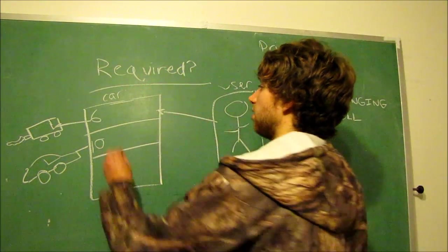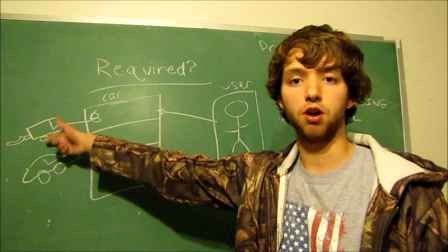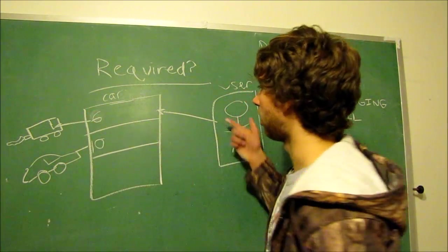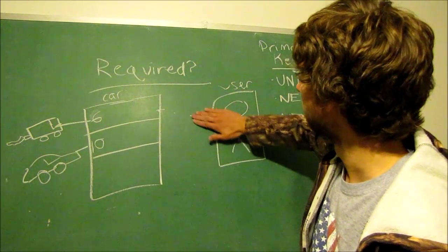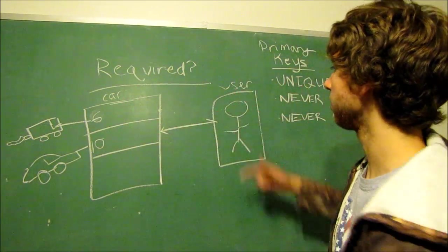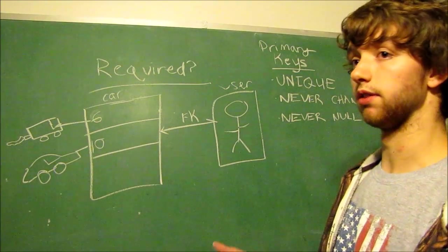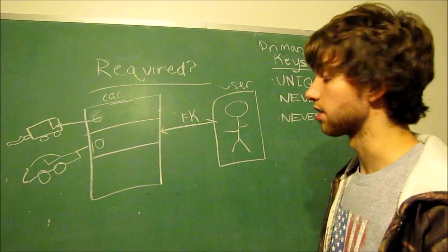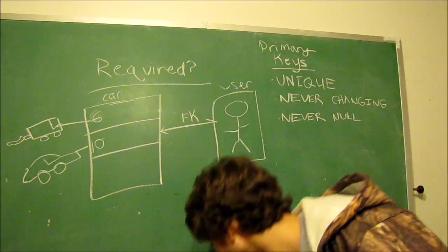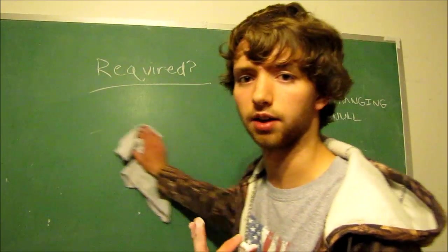We don't ever want it to happen to where this number gets updated or we change the primary key and it's still referring to the same exact car because then we have a changing primary key. But with foreign keys, it can change in the sense that I no longer own this car, now I own this car. So we didn't have any primary keys updated, but the foreign keys, which would be this connection right here, did update. So that kind of is a little bit of a difference between primary keys and foreign keys. Primary key values should never change. Foreign key values can change because references change.